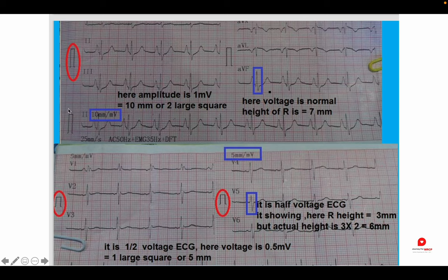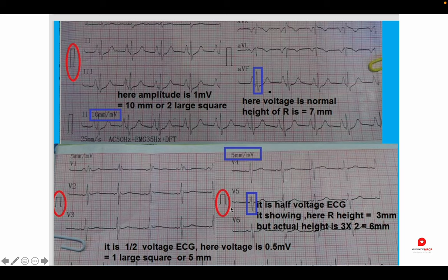Looking at a standard ECG example, on the left side there is an indication sign showing the voltage. As you can see, it includes two large squares, meaning it is a standard ECG voltage. In the second ECG example, the voltage sign covers only about 10 small squares, not 20 small squares or two large squares — so it is below standard. You can clearly see that the waves are very small in this low voltage ECG. When you get an ECG, first check the voltage and the speed.